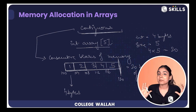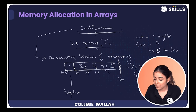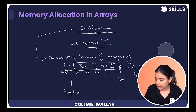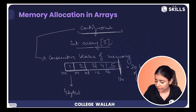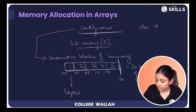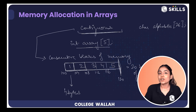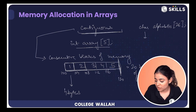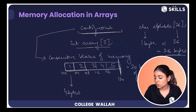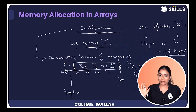For example, if I create a character array of size 26 to store alphabets, the memory allocated would be 1 byte times 26, which equals 26 bytes. So the memory used depends on the data type size and the number of elements.